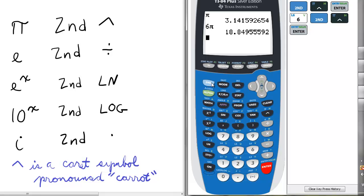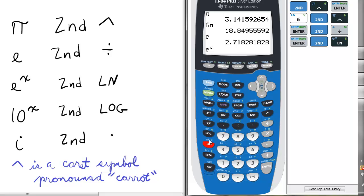Next, there's e, and we access that by pressing second and the division key, and enter. So e is approximately 2.718. If we had to raise e to a certain power, we press second and the ln key to access e raised to a power. Let's raise it to the fifth and press enter. So e to the fifth is 148.4.